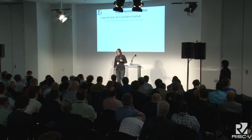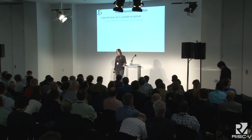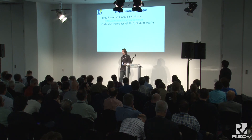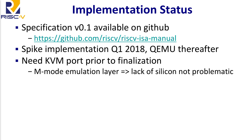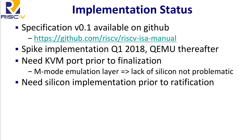The first version of the specification is written and is in the ISA manual repo on GitHub. There are no software implementations of the hypervisor extension yet; we're anticipating implementing it in Spike in a couple of months, with QEMU to follow shortly thereafter, and hopefully the first KVM port very quickly after that. Because the hypervisor mode can be emulated efficiently in M mode even without the hardware, we're hoping KVM can be brought up on silicon using this emulation approach before actual silicon is available. We've had good success not finalizing RISC-V extensions until silicon is available, so we'll wait until at least one research group or company implements the proposed hypervisor extension before pushing toward ratification.